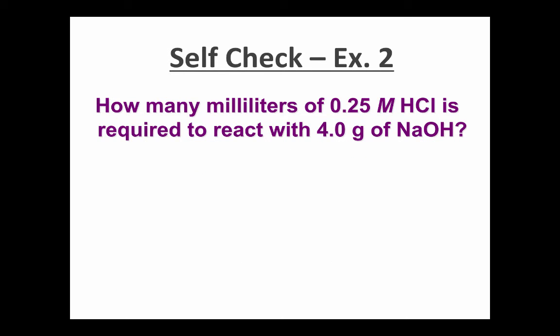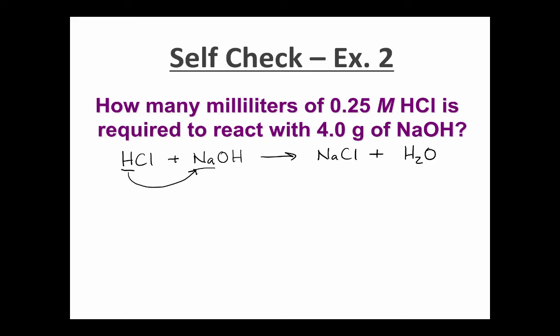In the second example: how many milliliters of 0.25 molar HCl is required to react with 4 grams of NaOH? The first step is to write a balanced equation. HCl and NaOH are both reactants. This is a double replacement reaction where H and Na switch places, forming NaCl and HOH — or water, H2O. Like the last equation, all coefficients are ones. The concentration of HCl is 0.25 moles per liter.